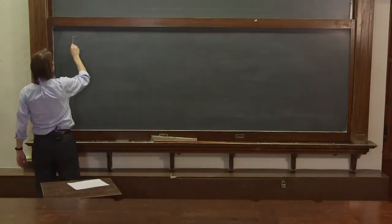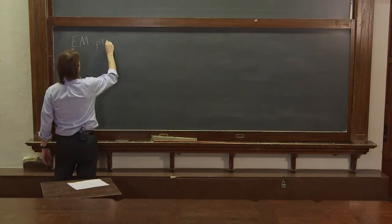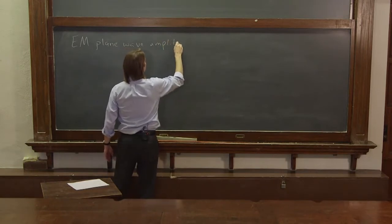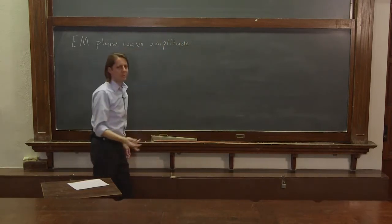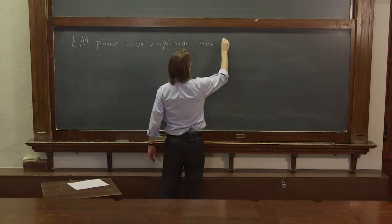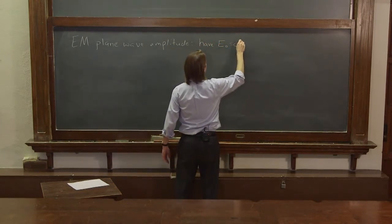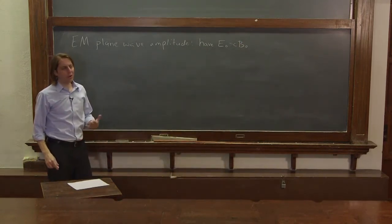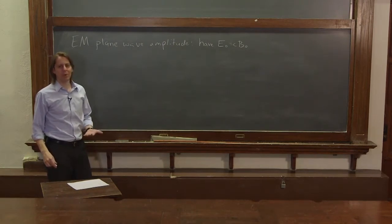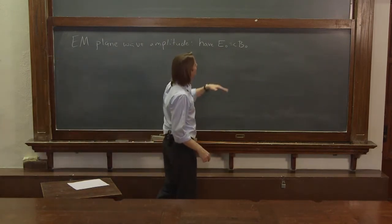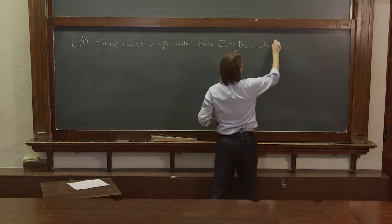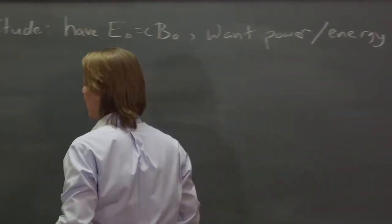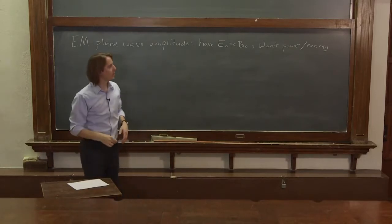Here's another look at the EM plane wave amplitude. We already have the amplitude in terms of E naught, and that's equal to c times B naught. But that's not really as useful. When you buy a light bulb, you don't go buy a 10 volt per meter light bulb — you don't want your amplitudes in terms of fields. You want power and energy. So we need to think about how much energy flows in an electromagnetic plane wave.